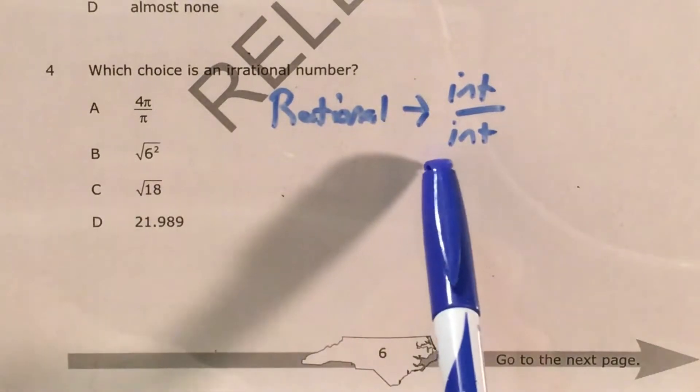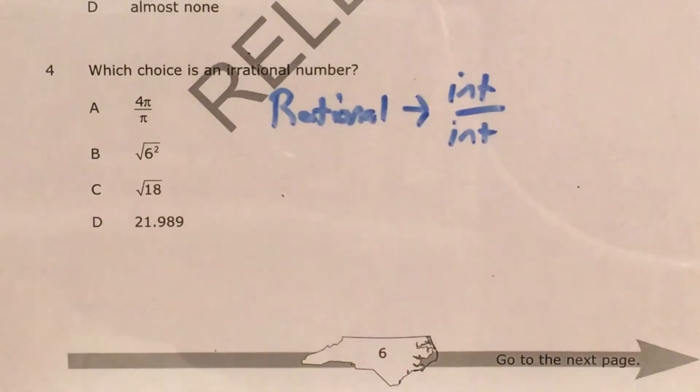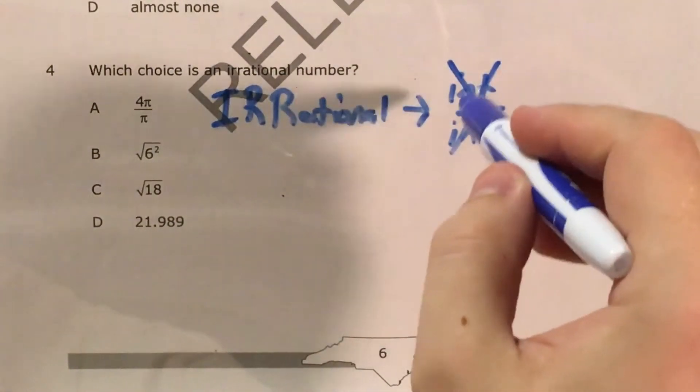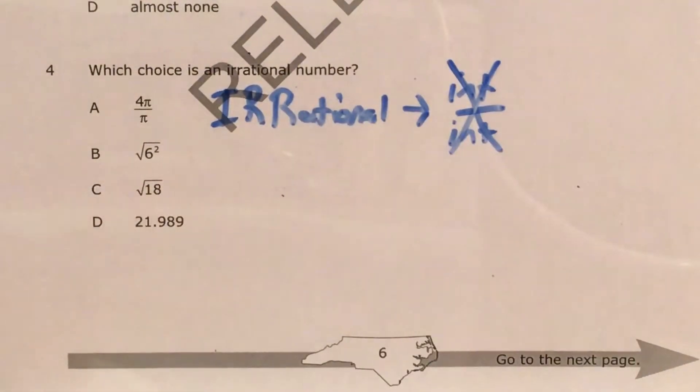Whereas irrational is the opposite. I cannot make a fraction. So for an irrational number, I will not be able to do this. I won't be able to have a fraction with integers in it. Using this framework, we're going to knock out our answer choices until we figure out which one is correct.